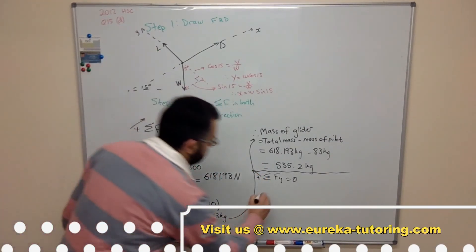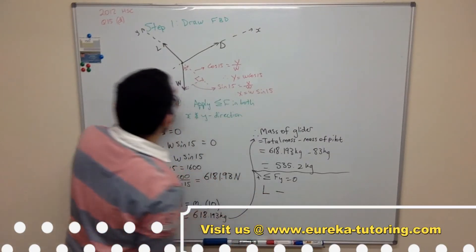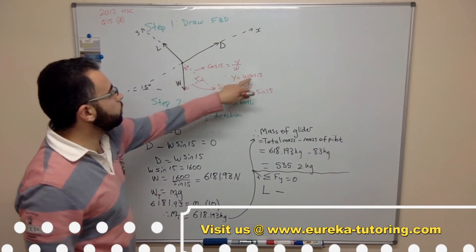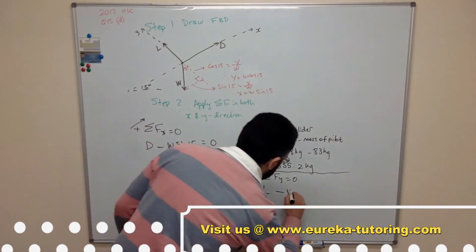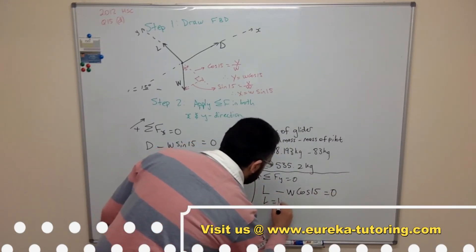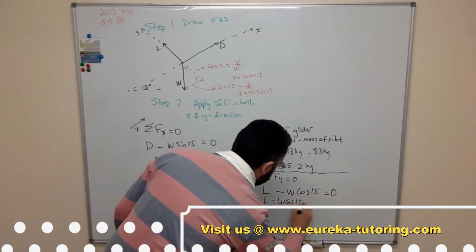So that's the direction to be positive. So we've got our lift force. And we have our y component of the weight force which is w cos 15. W cos 15 equals zero. Lift equals w cos 15.